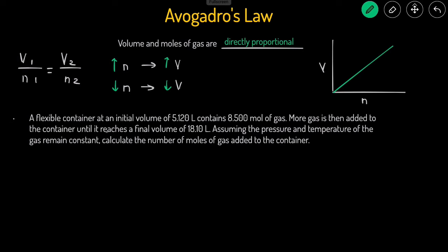Here's another problem. A flexible container at the original volume of 5.12 liters, that's our V1, contains 8.5 moles, that's going to be our N1. More gas is added to the container until the final volume is 18.1 liters, and that's going to be V2. Assuming that pressure and the temperature stay the same, calculate the number of moles that were added to the container.